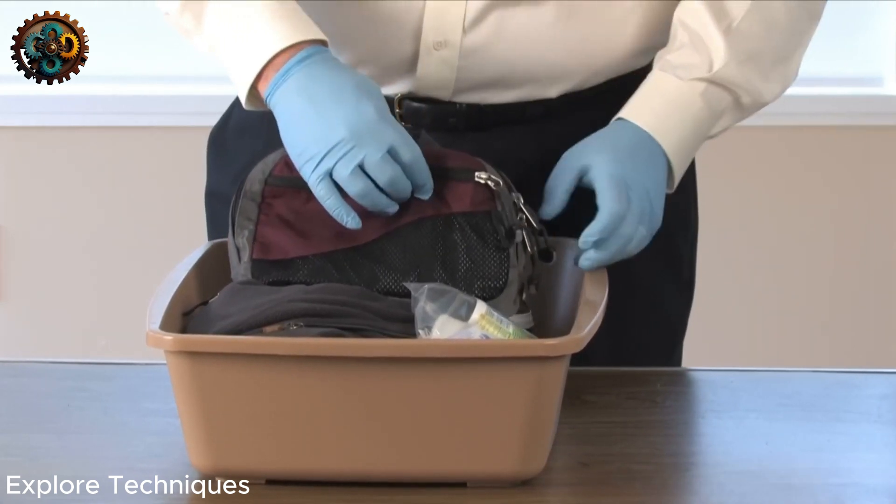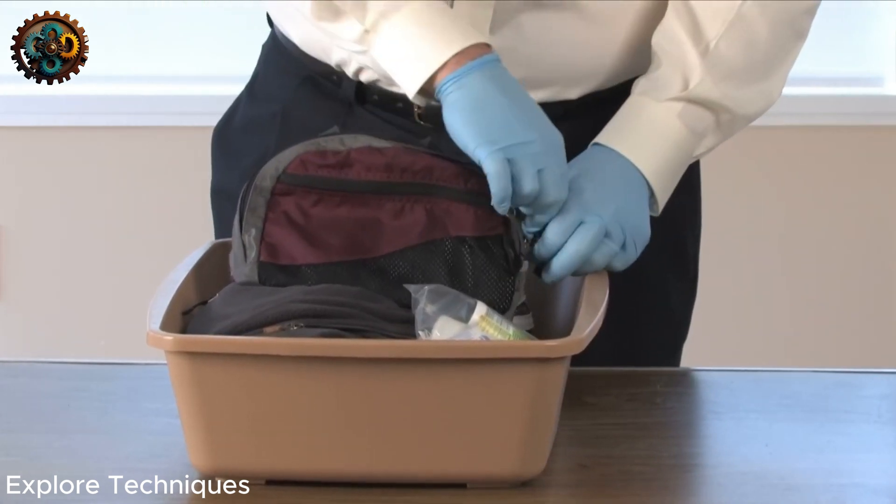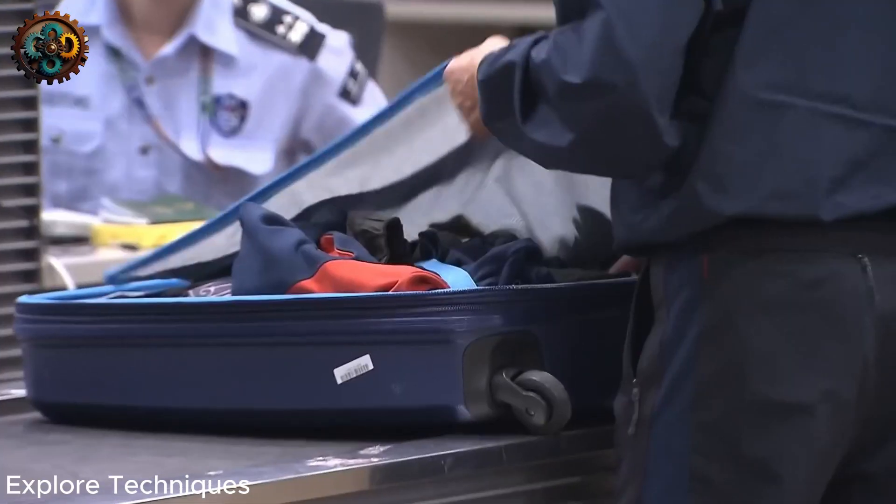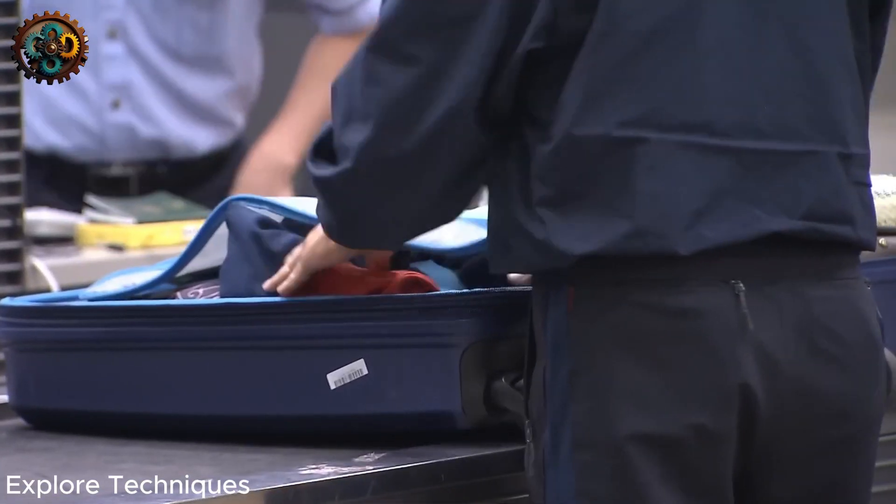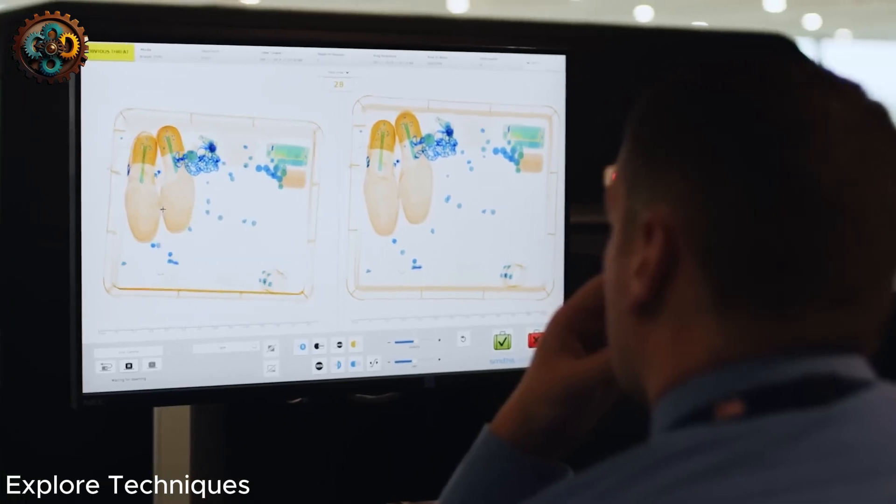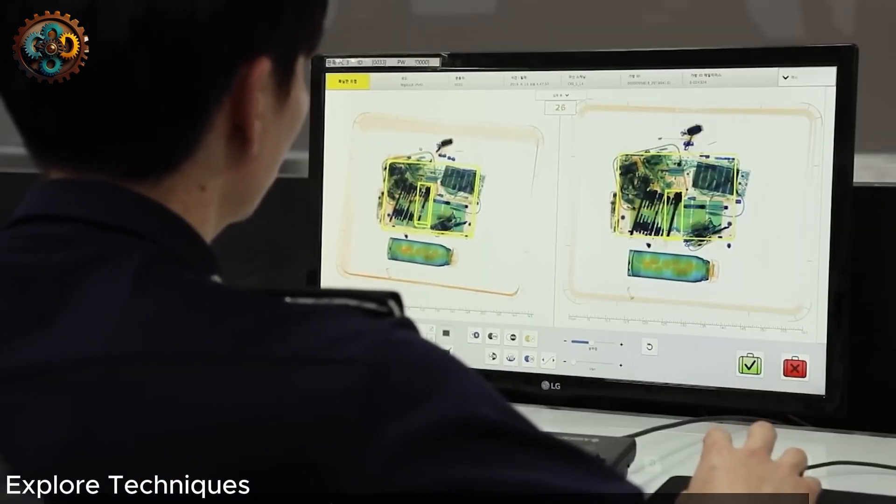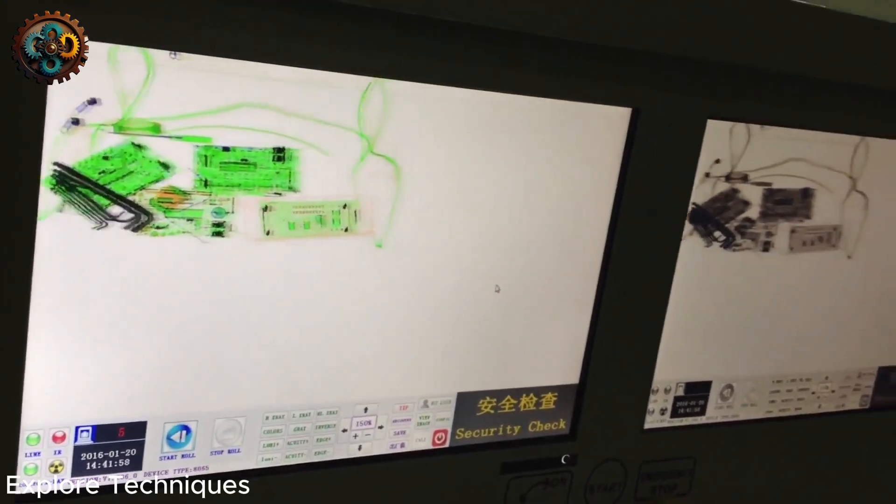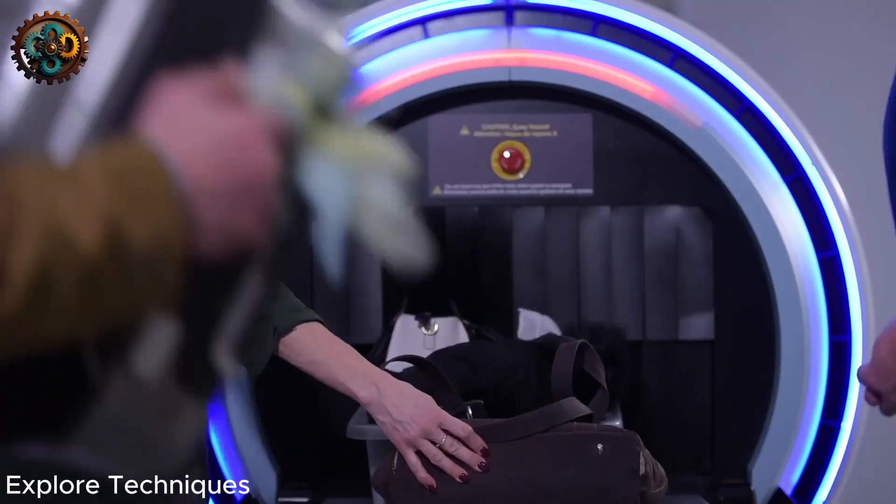These new scanners are making airport security less of a pain and a lot safer. Both the new scanners and the new inspection machines use the same technology: advanced x-rays. These new scanners can not only detect the shape of the items in your bag, but also identify the material they are made of. This allows the machine to distinguish between water and explosives in your water bottle.